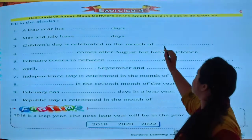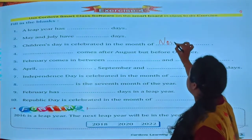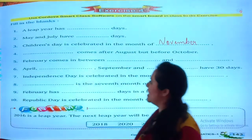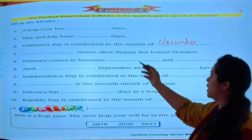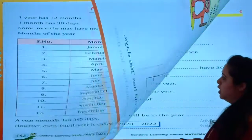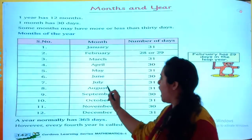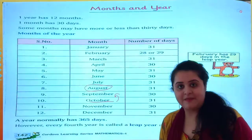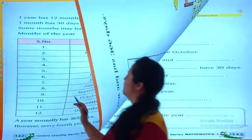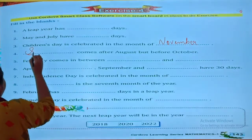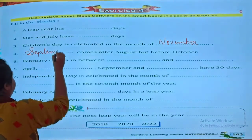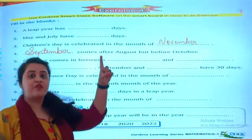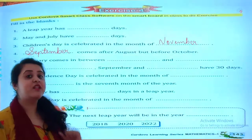Children's Day is celebrated in the month of November — 14th November. The month that comes after August but before October is September.